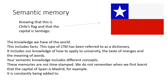That last example — the meaning of words — is particularly important. Your semantic knowledge includes different concepts such as what it means to love someone or to not like someone, but you wouldn't remember when you first learnt the concept of love. These memories are not timestamped, and another example is we wouldn't remember when we first learnt that the capital of Spain is Madrid. Semantic memory is constantly being added to.